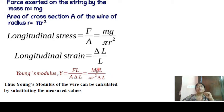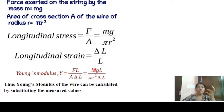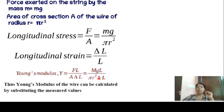Young's modulus is calculated by substituting values: mass of the load, r is the radius, the elongation δL, g is acceleration due to gravity, L is the original length of the wire, δL is the change in length — that is the elongation — and r is the radius of the area of cross-section of the wire.